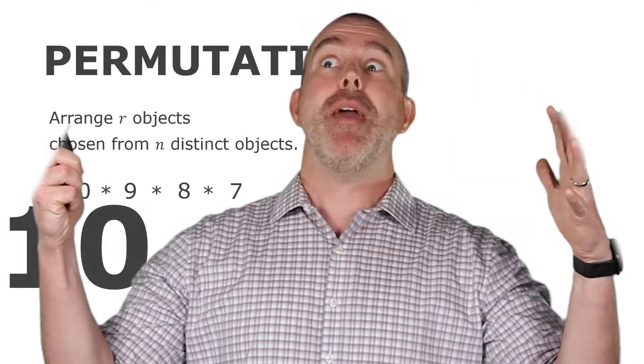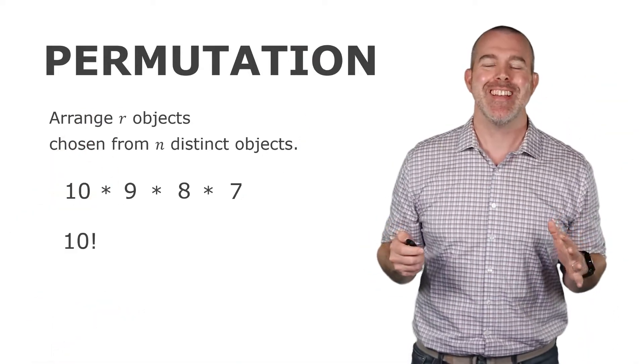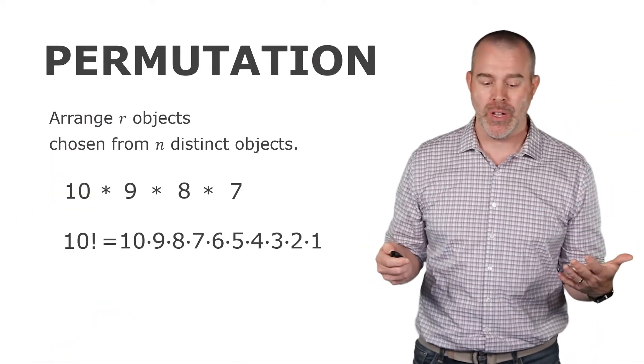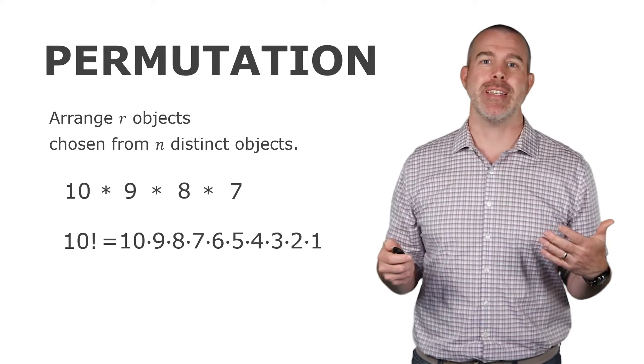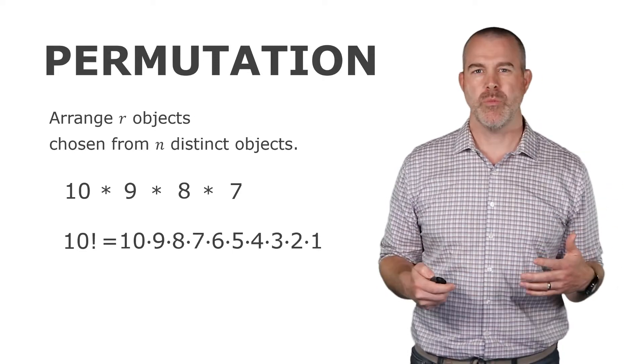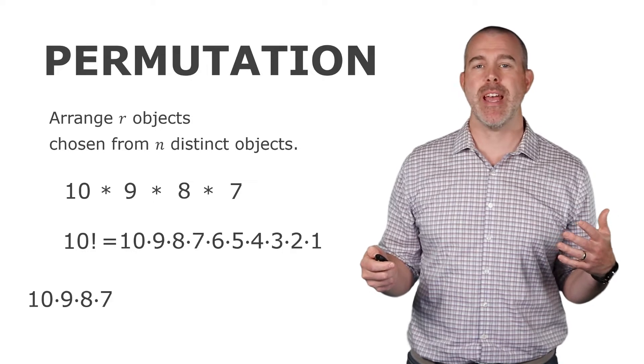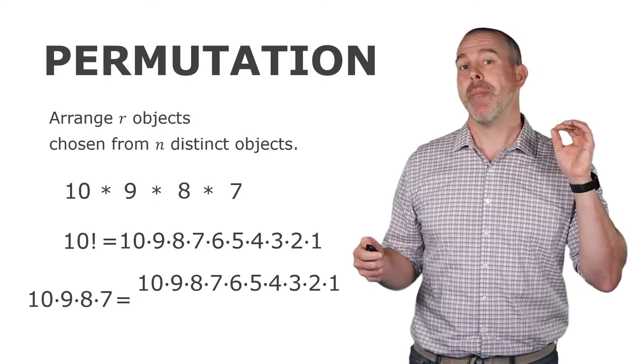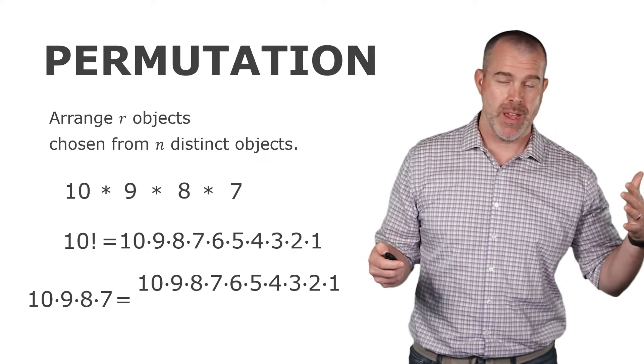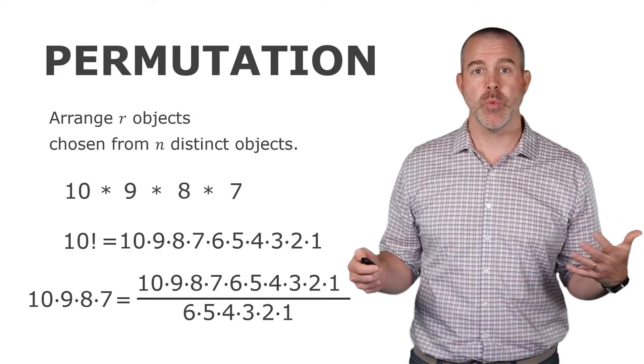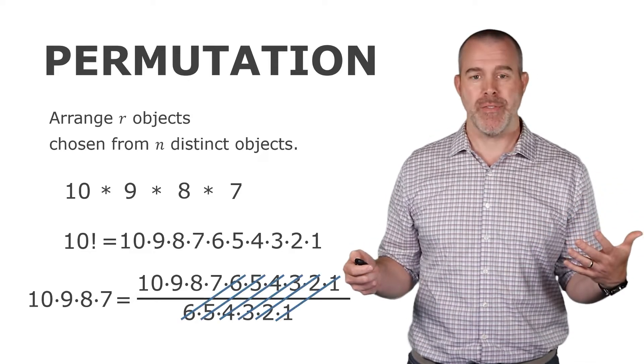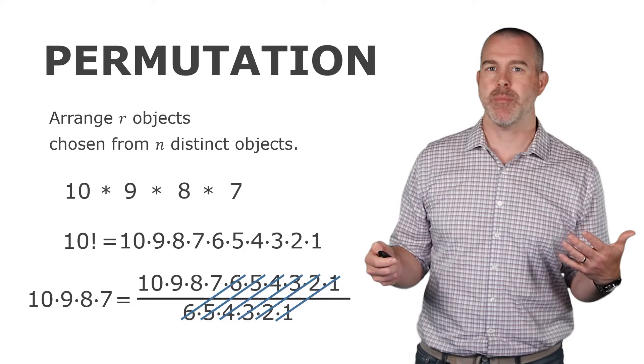What it means is 10 factorial, which is 10 times 9 times 8 times 7, etc., down to 1. So if we look at our 10 times 9 times 8 times 7, what if we just multiply by all of them all the way down and then divide by the ones we don't need? So that would simplify and give us the 10 times 9 times 8 times 7.